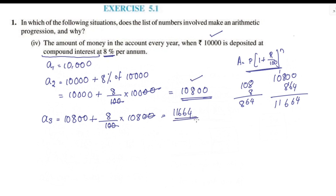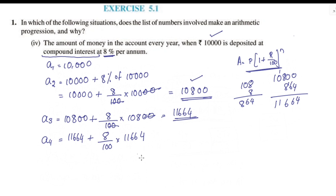For A4, we calculate 8% of 11,664. We multiply 11,664 by 8 and divide by 100 to get the interest for the third year.